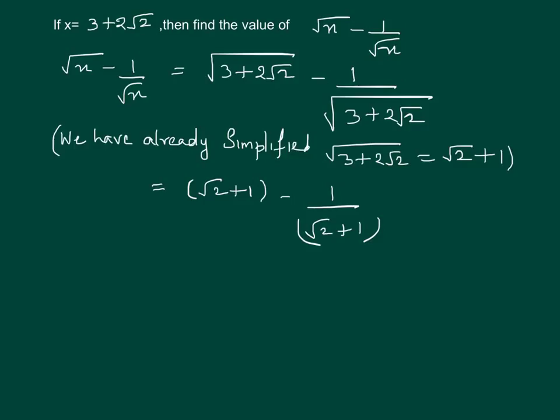To simplify this further, we will require the rationalization factor of √2 + 1, which is √2 - 1. So let us divide and multiply by the rationalization factor √2 - 1.